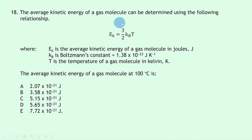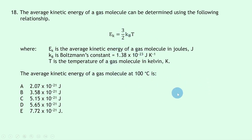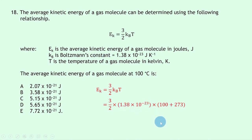Question 18 is a skills question using the unseen formula Ek = (3/2)kBT, where kB = 1.38 × 10⁻²³ J/K is Boltzmann's constant and T is temperature in Kelvin. Converting 100°C to Kelvin: T = 100 + 273 = 373 K. Substituting: Ek = (3/2) × 1.38 × 10⁻²³ × 373 = 7.72 × 10⁻²¹ joules. The answer is E.